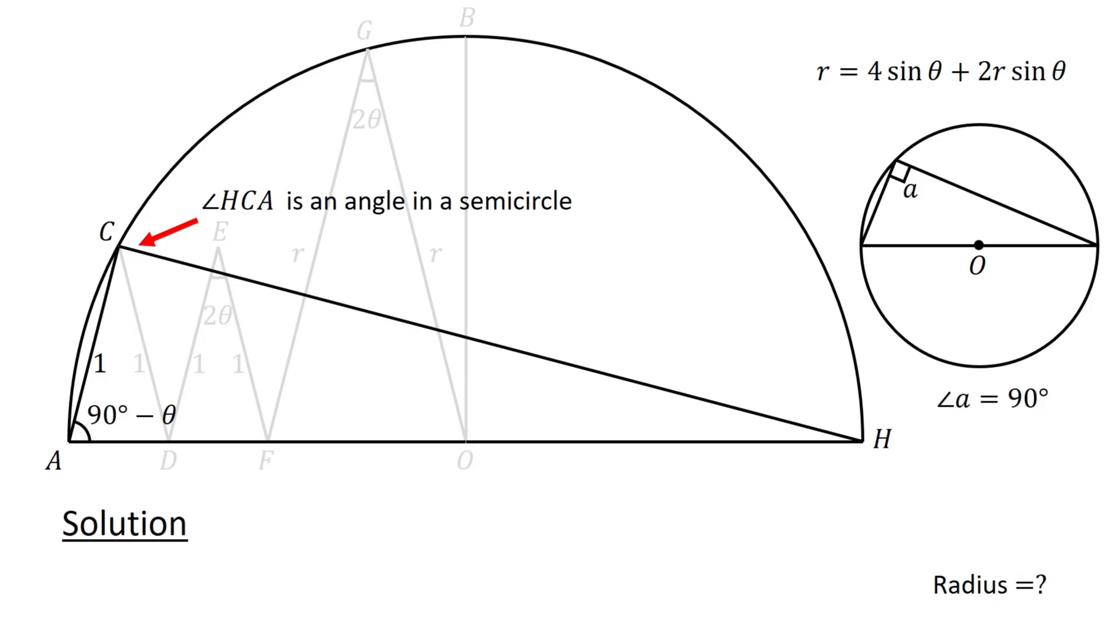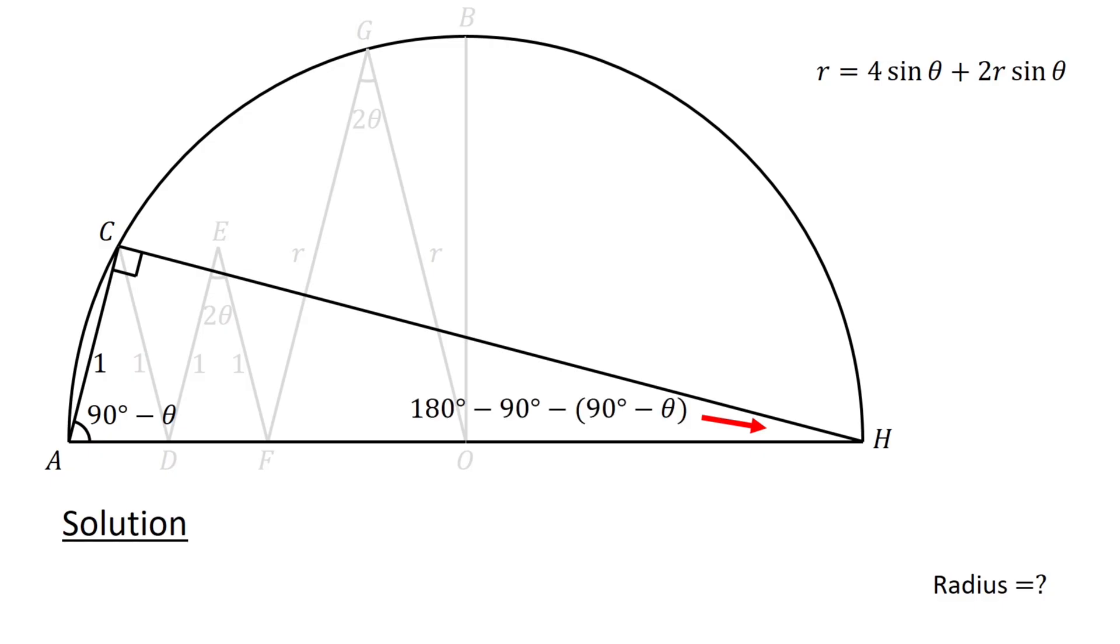Therefore, angle HCA equals 90 degrees. Angle AHC equals 180 degrees minus 90 degrees minus 90 degrees minus theta, which equals theta. And since AH is the diameter, its length is 2 R.